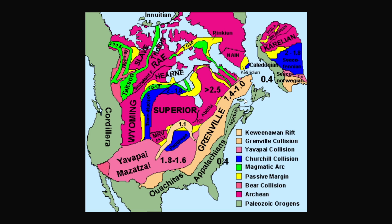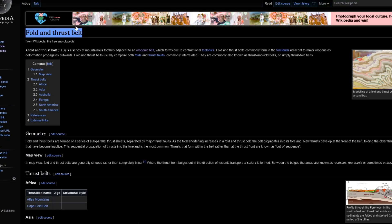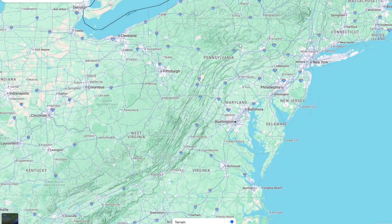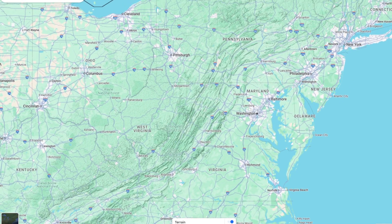An orogeny is essentially a mountain-building event. The Trans-Hudson Orogeny had this area called the Belcher Fold Belt. A fold and thrust belt is a specific type of orogeny that forms when two tectonic plates collide into each other — it's kind of like if you were to push a piece of paper and it would create a bunch of folds. One example of a fold and thrust belt are the Appalachian Mountains.